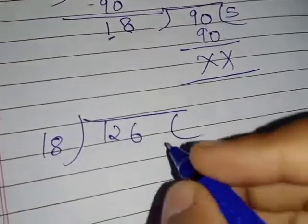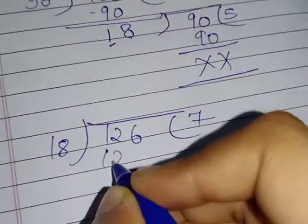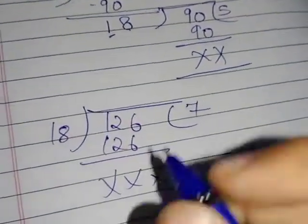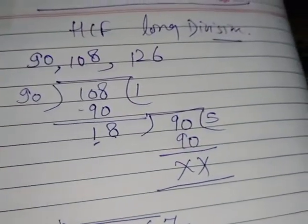We know in the table of 18, 7 times we will get 126. Again, this is cross. So, in the long division method, keep in mind,